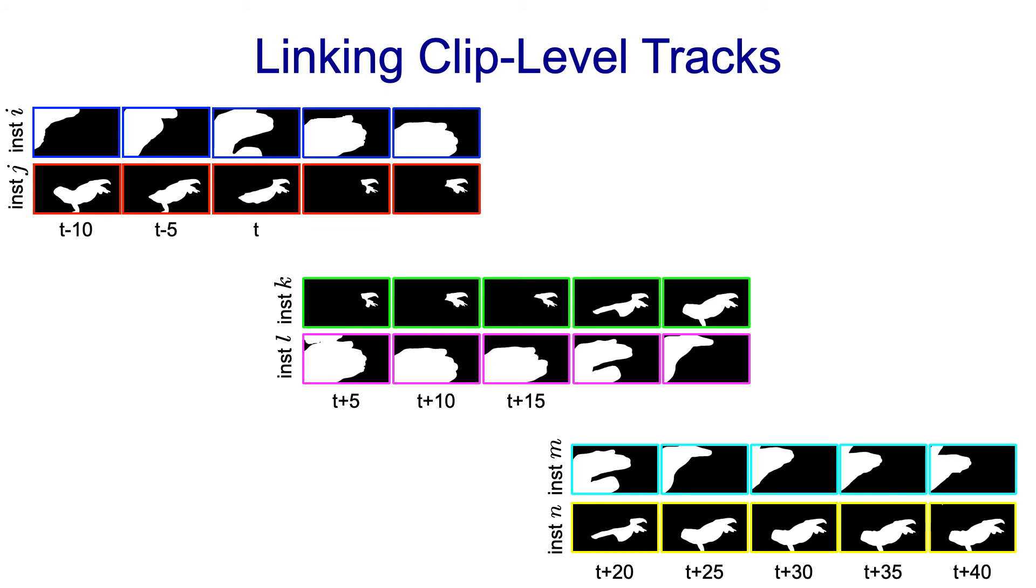Lastly, we need to link the predicted clip-level tracks into video-level instance sequences. This is done by comparing temporally adjacent clips and measuring how well their predicted instance masks overlap with each other. The clips that have high mask overlap are then linked together.